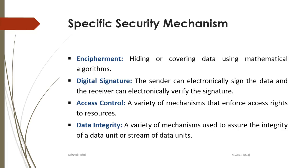In the checksum mechanism, the sender generates a number from the message being transferred, appends that number to the message, and sends the appended code to the receiver. The receiver also generates a checksum from the received message and verifies that the number sent by the sender matches the number generated on the receiver side. If both numbers are equal, the message was not modified during transmission. Such security mechanisms are used to provide data integrity.